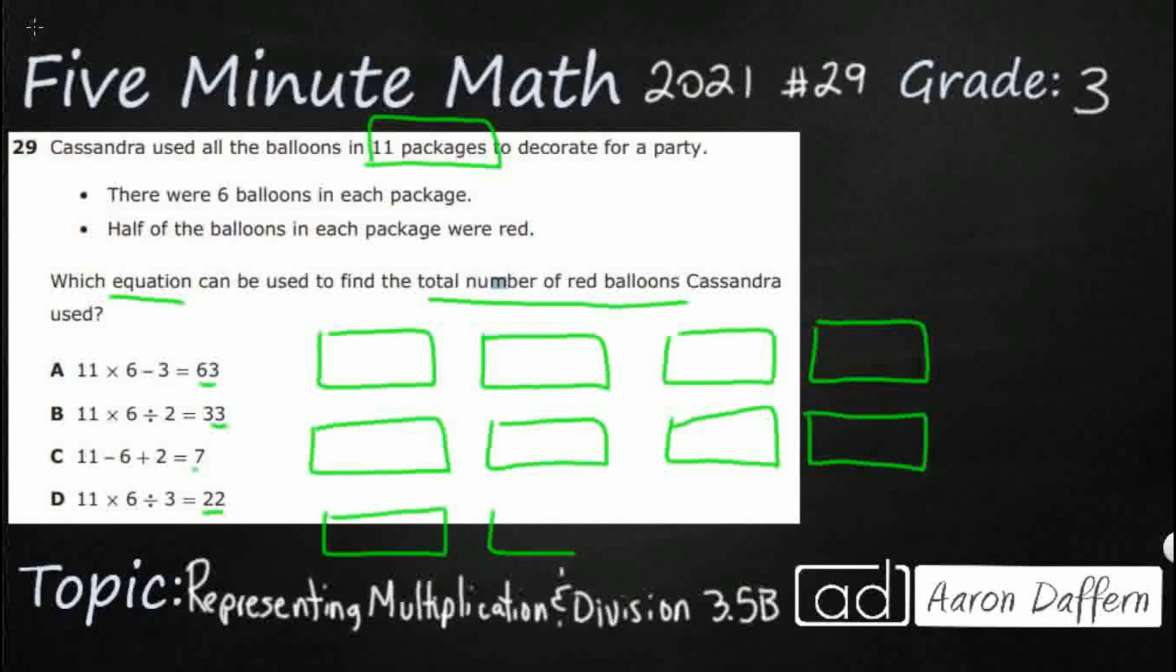We've got non-red ones. So here we go. There's my 11. I'm not going to finish out that bottom row because that would be a full 12. We have 11 packages.